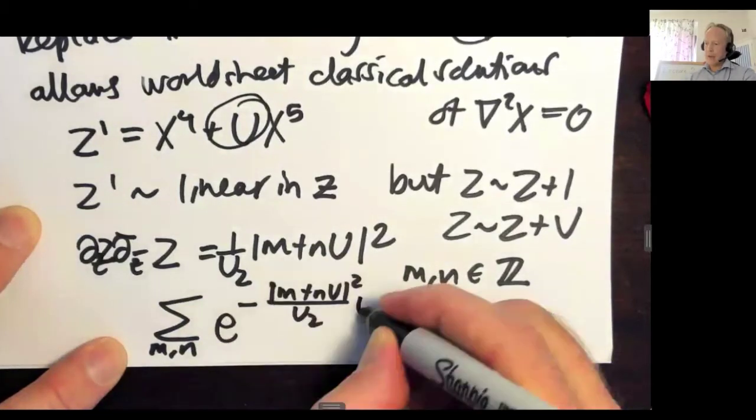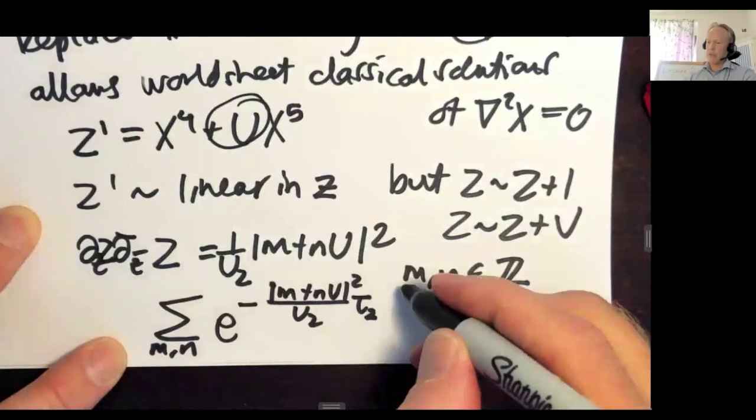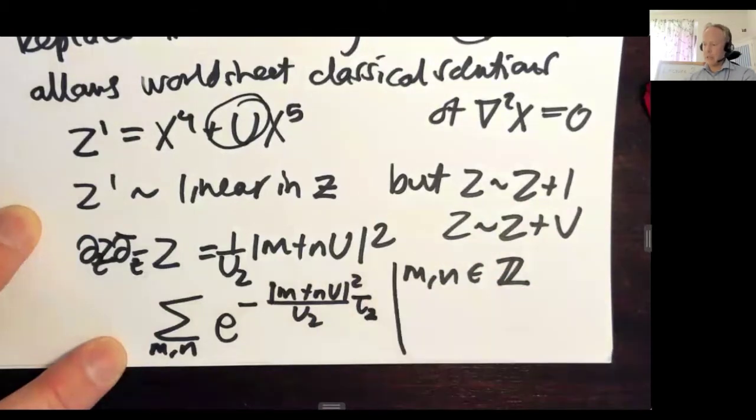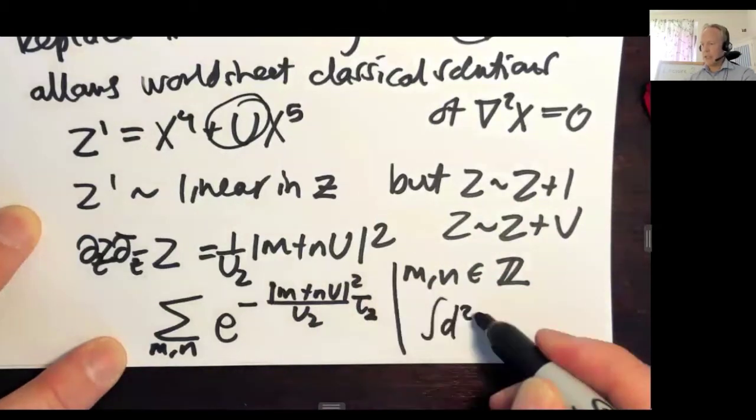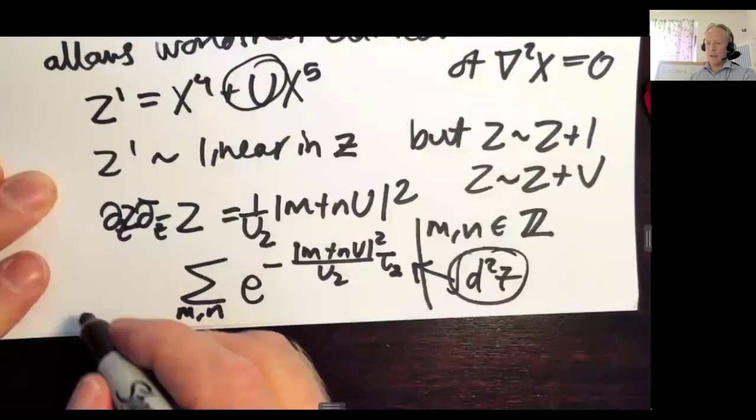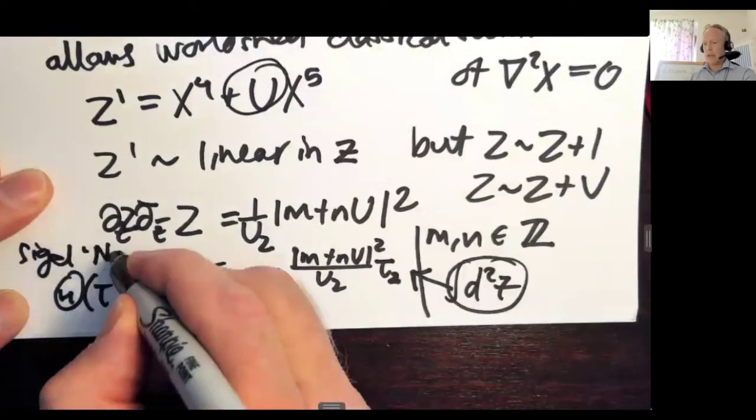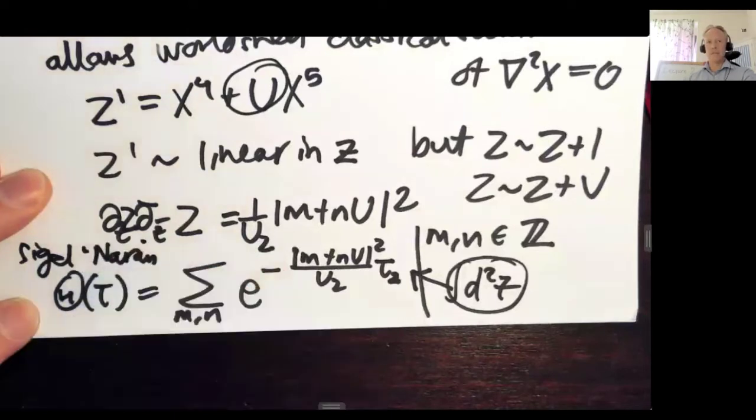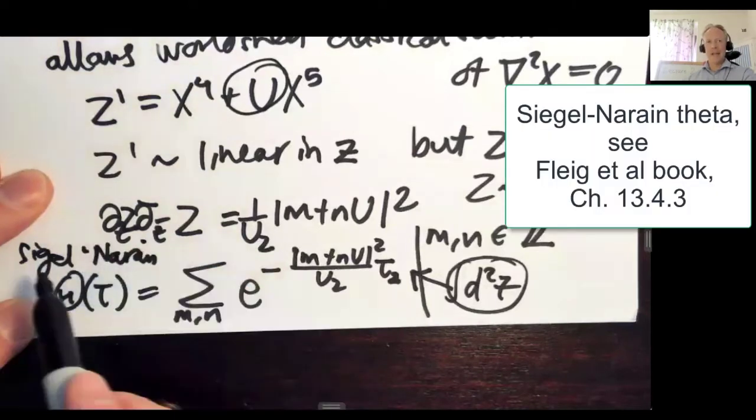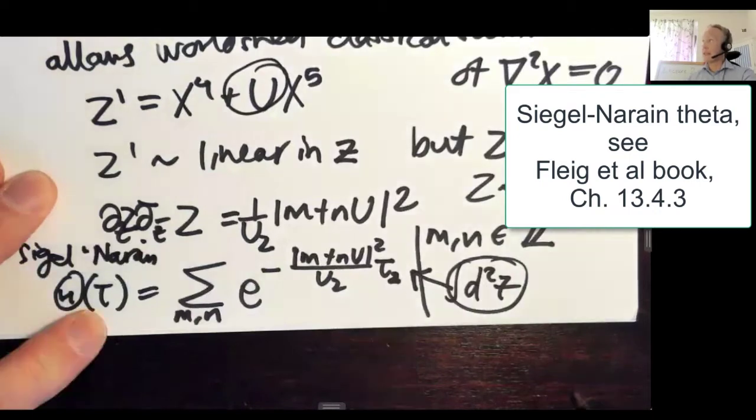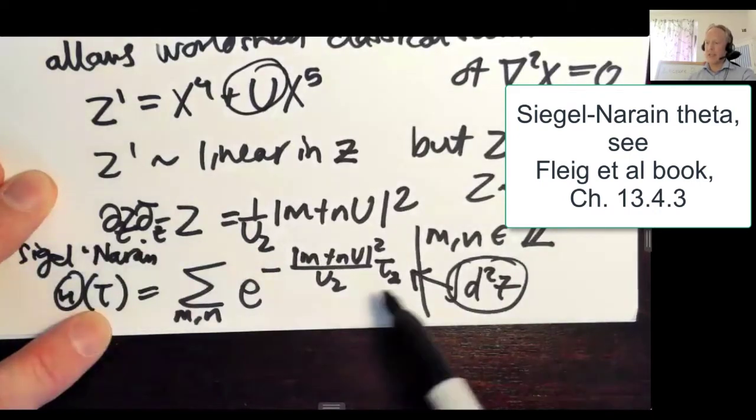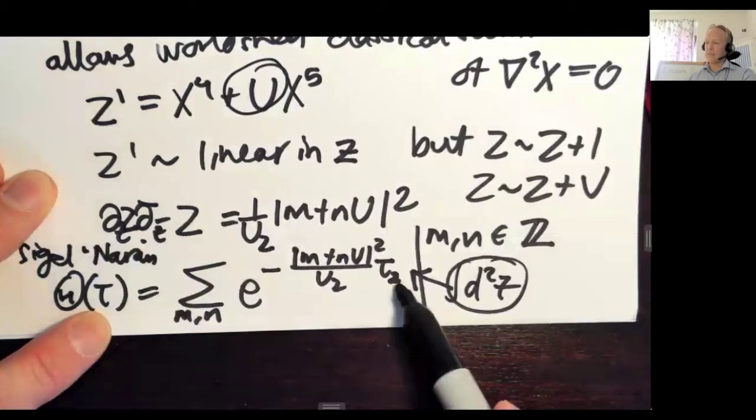And then you get the area of the world sheet torus, which is just given by imaginary part of tau. So this is from the integration over Z in the world sheet action. And this is called a Siegel-Naraine theta function. And this is very nice and simpler than these non-holomorphic instanton series I talked about before, in the sense that this is exponentially suppressed in tau 2.